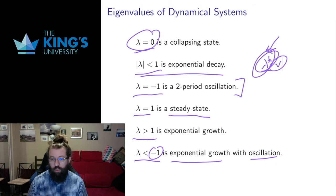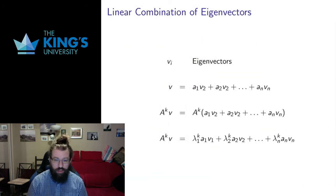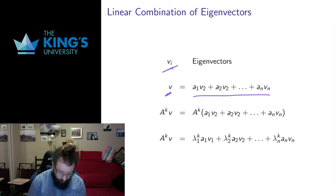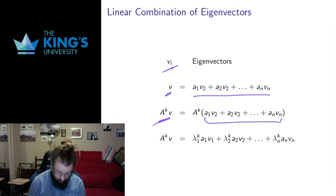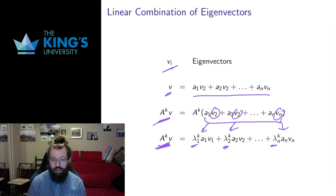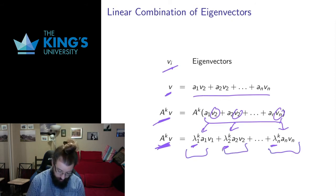That tells us what happens when we start with an eigenvector, but typically we could start with any state. If we can write the starting state as a linear combination of eigenvectors — which is often possible — then the matrix action applied many times will act on each eigenvector component by multiplying by its corresponding eigenvalue. Each component can exhibit exponential growth, decay, or oscillation independently.